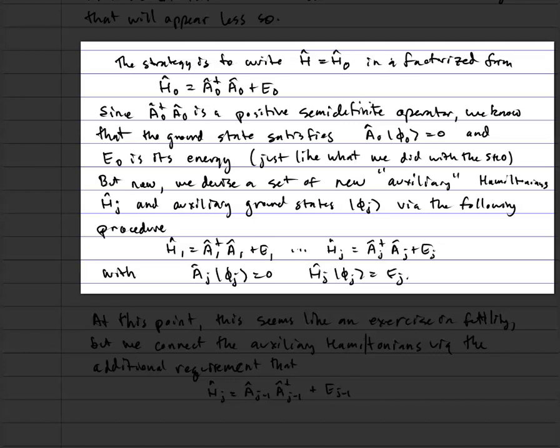We're going to write h₁ as a₁†a₁ plus e₁; h₂ is a₂†a₂ plus e₂; hⱼ will be aⱼ†aⱼ plus eⱼ. They're going to have aⱼ acting on |φⱼ⟩ equals zero, so that hⱼ|φⱼ⟩ equals eⱼ|φⱼ⟩.